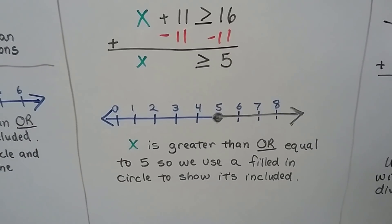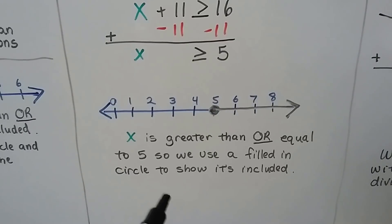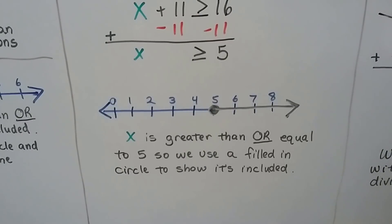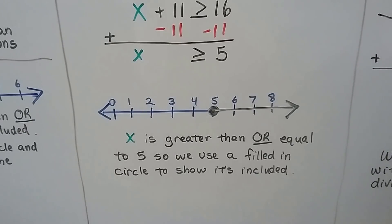And we can graph that too. x is greater than or equal to 5. So we use a filled in circle to show it's included. So it's any number that's 5 or greater.